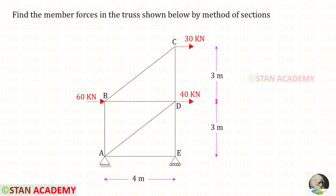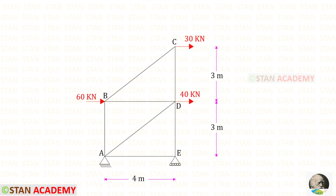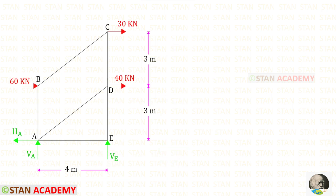Hello everyone. Today we are going to find the member forces in this truss using the method of sections. In this truss, at point A there is a hinged support and at point E there is a roller support. In the hinged support there will be two reactions, and in the roller support there will be only one reaction — here there is only a vertical reaction.